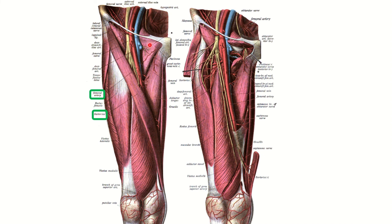Here we can see the femoral artery in the femoral triangle. Looking at the boundaries of the femoral triangle, we can see the femoral artery within it. The surgeon wants to access the distal part of the femoral artery, which passes through the adductor canal and goes to the popliteal area.